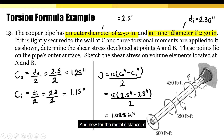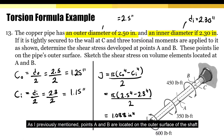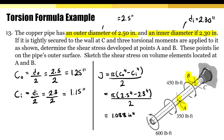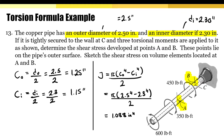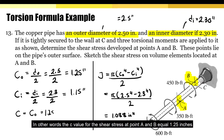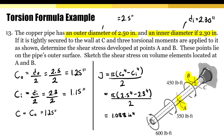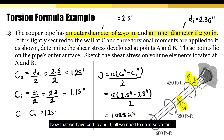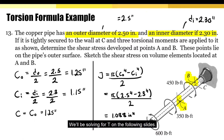Now for the radial distance C. As previously mentioned, points A and B are located on the outer surface of the shaft, so C equals CO. In other words, the C value for the shear stress at points A and B equals 1.25 inches. Now that we have both C and J, all we need to do is solve for T, which we'll do on the following slides.